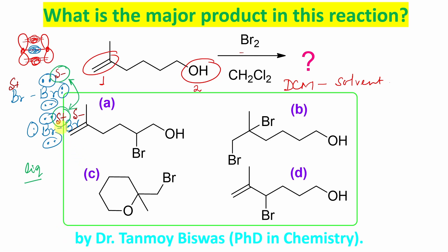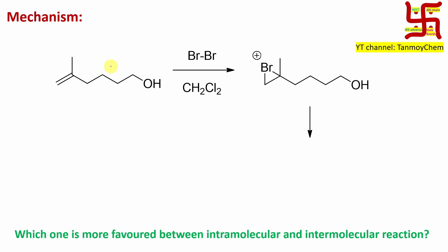So next point: if you look at this delta plus bromine, delta plus means slight deficiency of electron — that can act as the electrophile. And in this case, this pi bond is acting as the nucleophile. So how does the reaction take place? This delta positive bromine is attacked by this alkene.